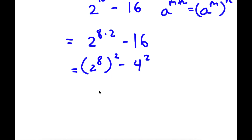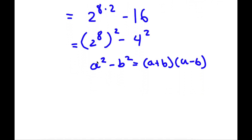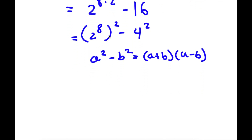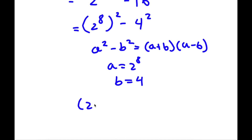Now if I have something in the form a squared minus b squared, this is equal to a plus b times a minus b. So I have 2 to the power of 8 squared minus 4 squared. In this case a is equal to 2 to the power of 8 and b is equal to 4. So now I have 2 to the power of 8 plus 4, times 2 to the power of 8 minus 4.